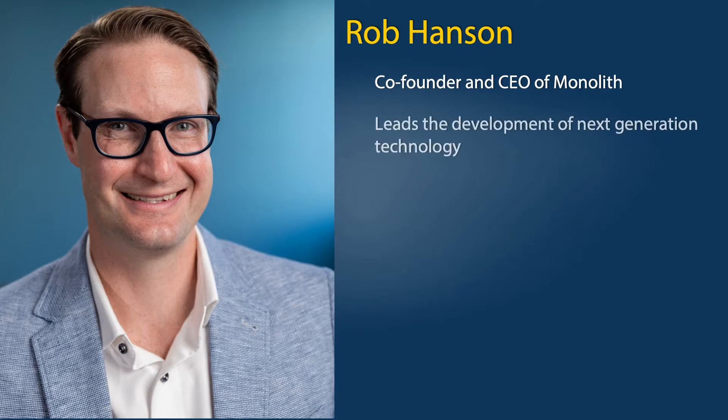This lesson was written by Rob Hanson, the co-founder and chief executive officer of Monolith, a U.S.-based startup. At Monolith, he leads the development of next-generation technology for producing low-cost, low-emission hydrogen and carbon black, an important raw material used in the manufacture of rubber and plastic.